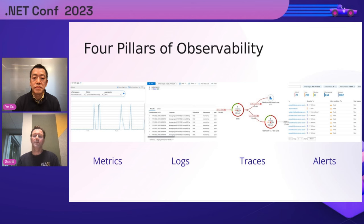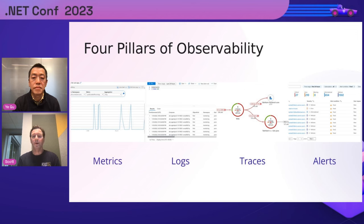Alerts are used to notify your team when certain conditions are met. These can be created on both metrics and logs, making your operators aware of resource outages and helping you manage the health and performance of your system with the goal of preventing downtime. Traces are the fourth pillar — they give you details about the behavior of a particular request. As your microservices grow and your environment becomes more complex, traces become an essential tool for tracking down issues.